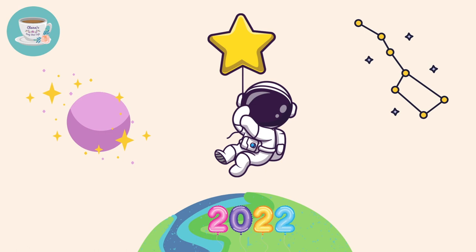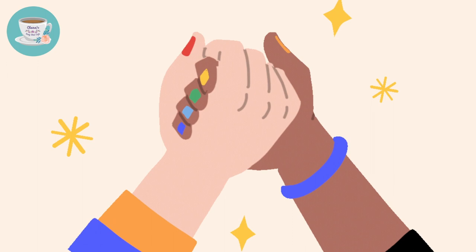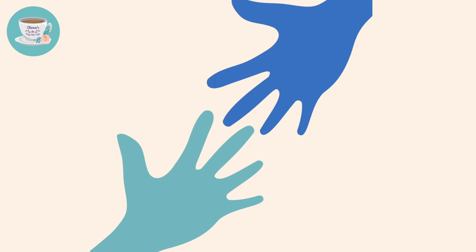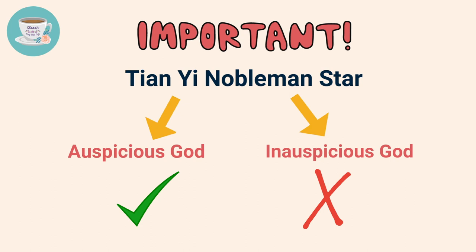You can also apply the same method to analyze your 10-year luck phases. If you are able to find Nobleman stars in one of your 10-year luck phases, this means that when you encounter challenges or difficulties in life, there will be someone helping you and offering you a hand during this 10-year period. It's also important to note that the Nobleman star has to be your auspicious god in order to be effective. If your Nobleman star happens to be your inauspicious god, then this Nobleman star would not be able to help you in any way.